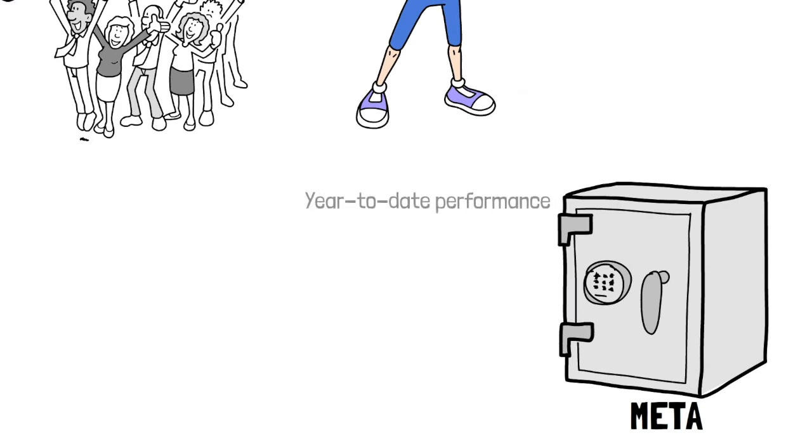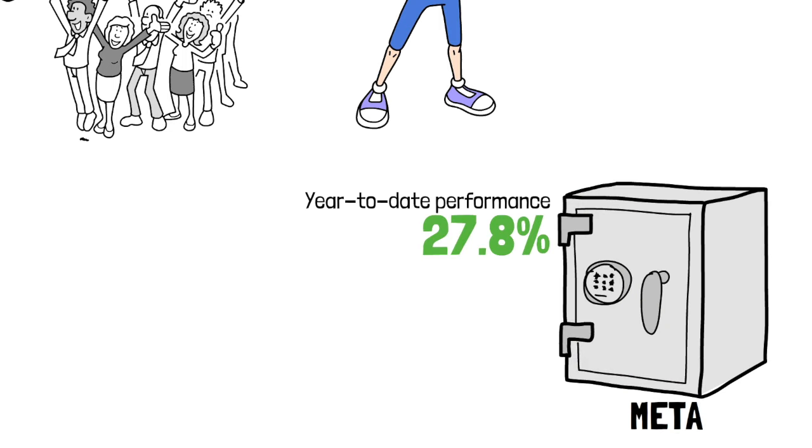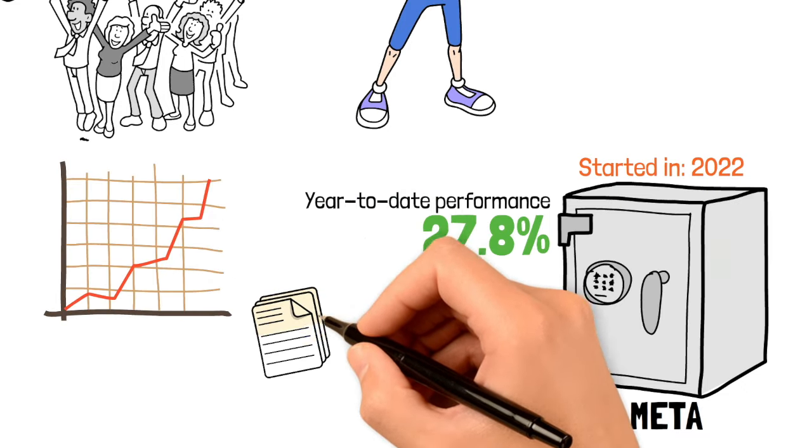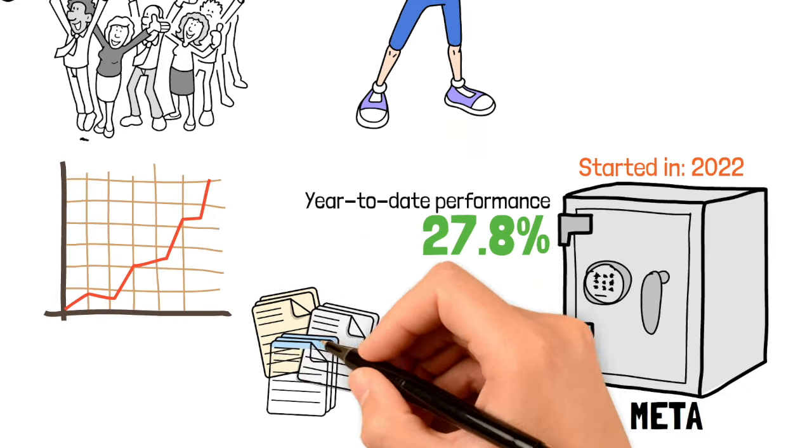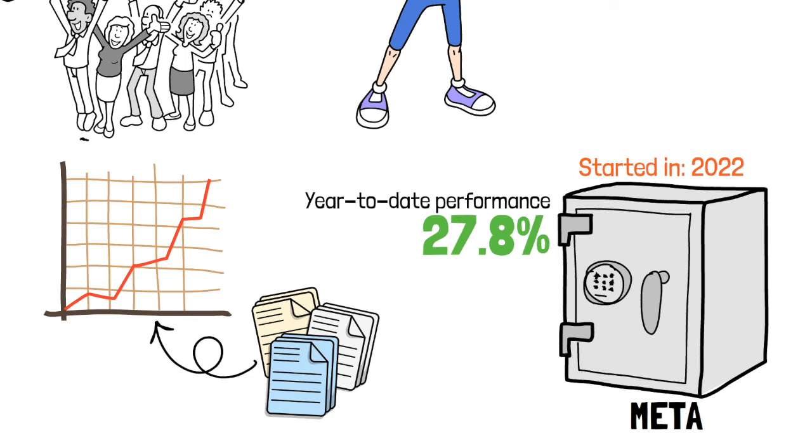Now, let's talk numbers. META has a year-to-date performance of 27.8%, showcasing its strong growth potential. The fund has been around for just two years, but it has already demonstrated robust performance. This performance is driven by its strategic holdings in companies at the forefront of AI and Metaverse technologies.